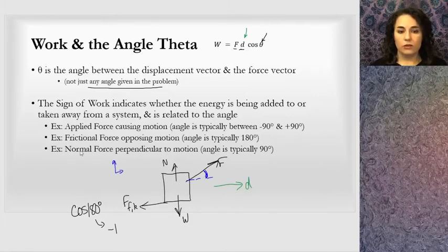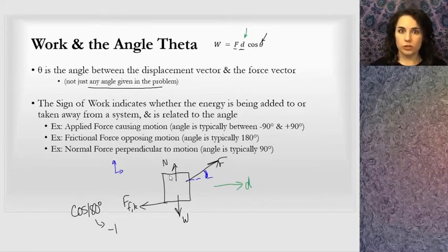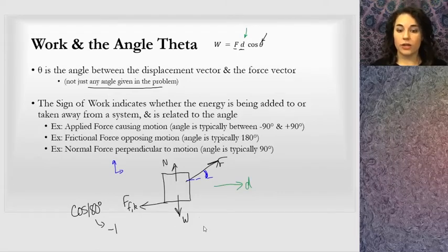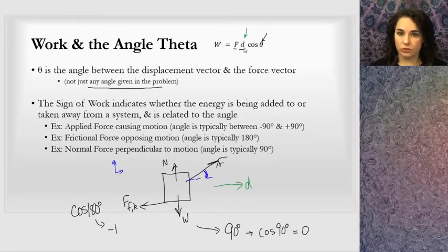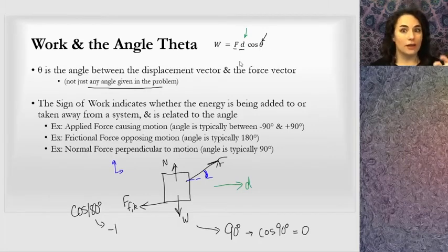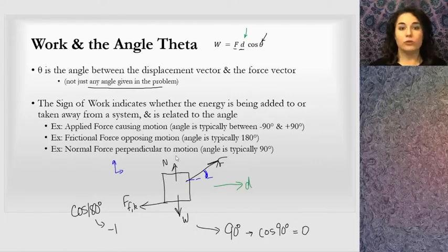The normal force and weight are perpendicular to the motion — the displacement is horizontal while normal force and weight are vertical. Those two forces are not contributing to the forward displacement; they're not adding to it or taking away from it. So when I look at the angle for those two forces, that's 90 degrees. Cosine 90 degrees equals zero, so even though the force has a magnitude and the displacement has a magnitude, the angle is 90 and we get zero overall for that term. You can save yourself some math if you notice that certain forces don't contribute to the motion — you may not even include them in your calculations.